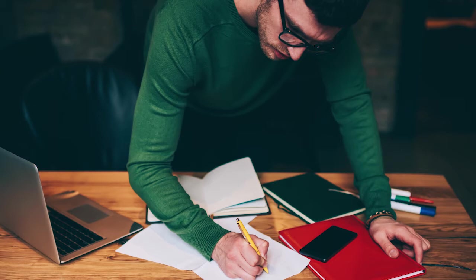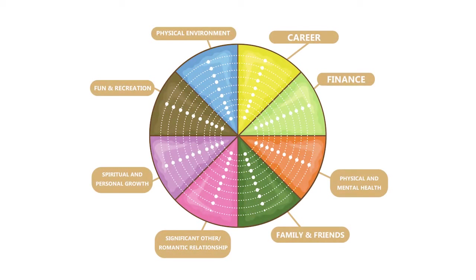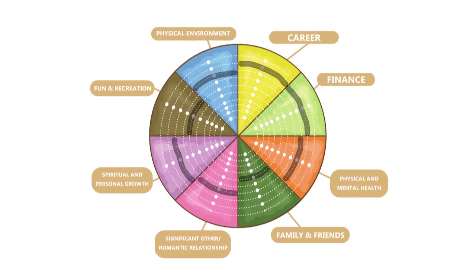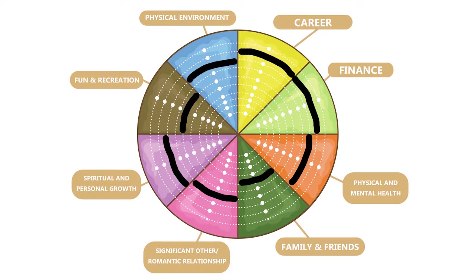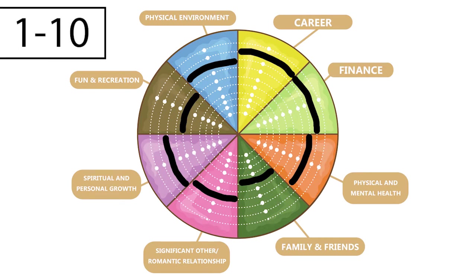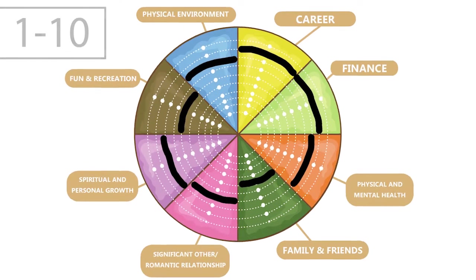Once you're settled and have your Wheel of Life in front of you, look at the example here of a filled-in version. The exercise itself is very simple: how would you rate each slice of the pie on the wheel, from one being the lowest to ten being the highest? It's as simple as that. Put the wheel by your side and let us start.